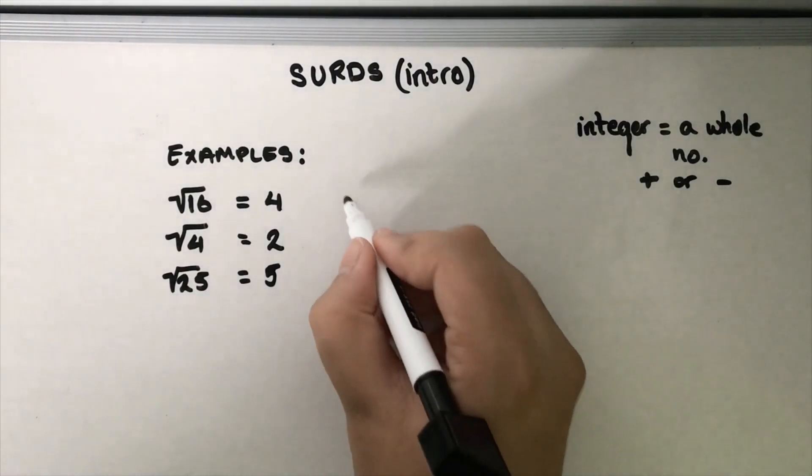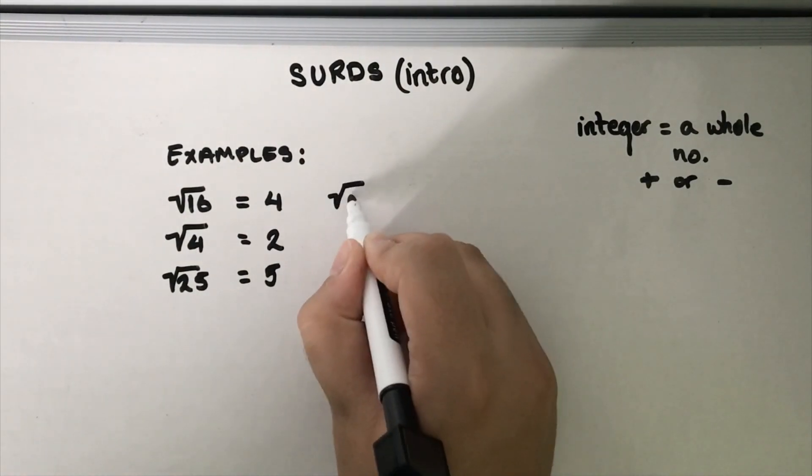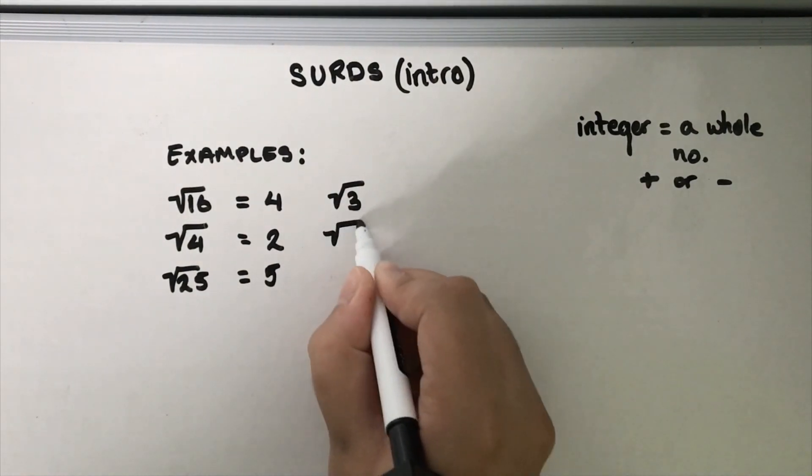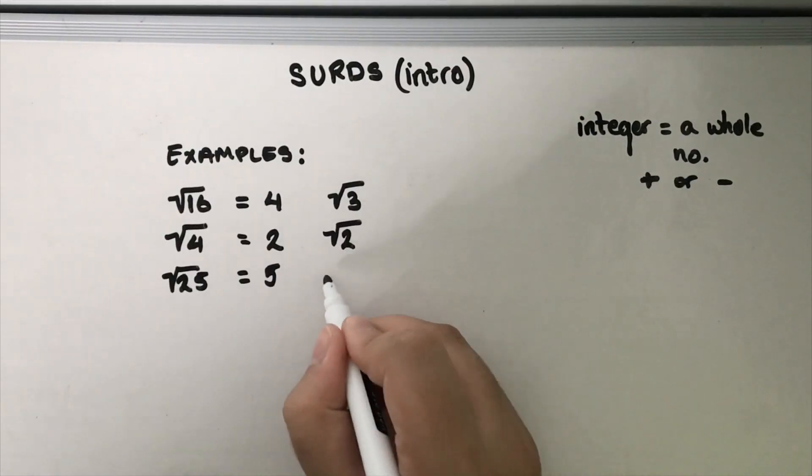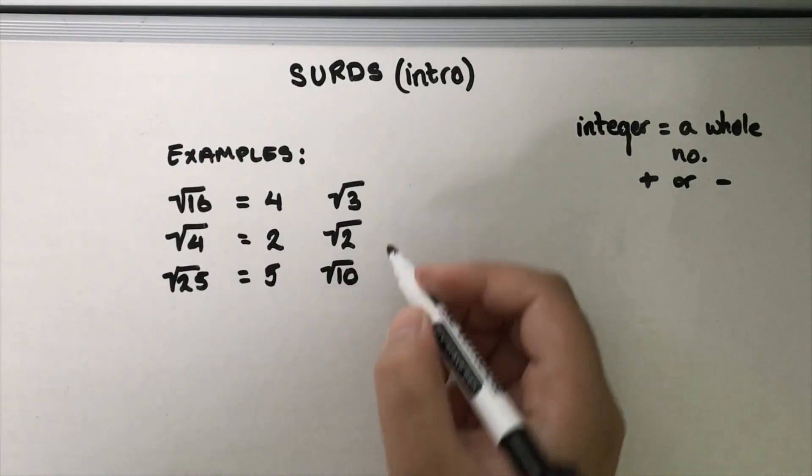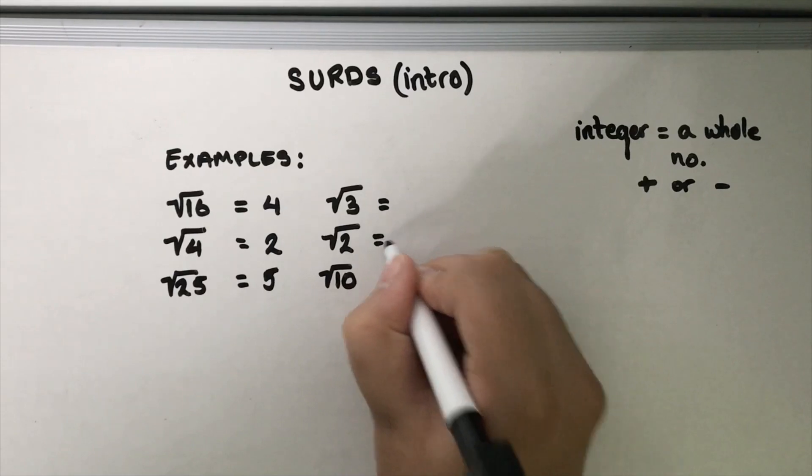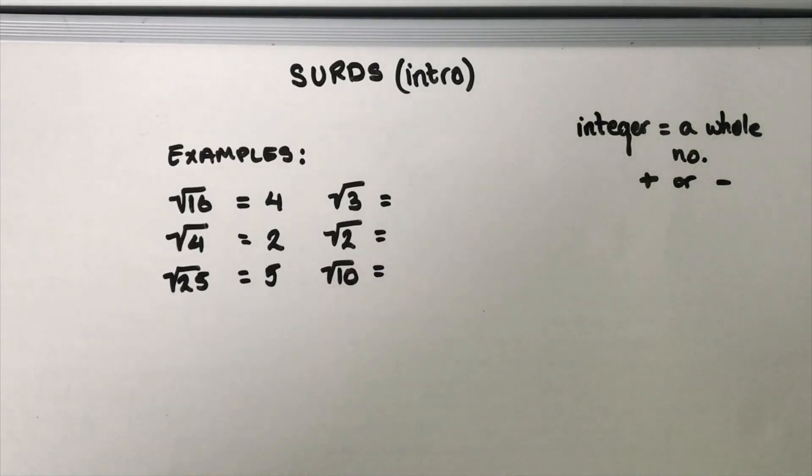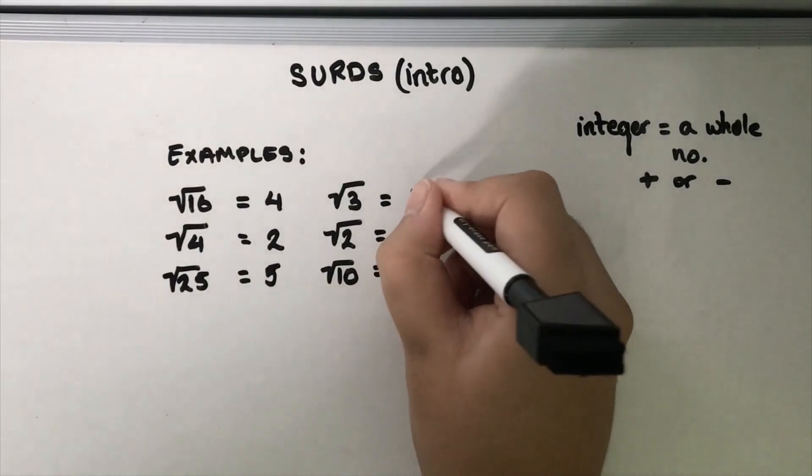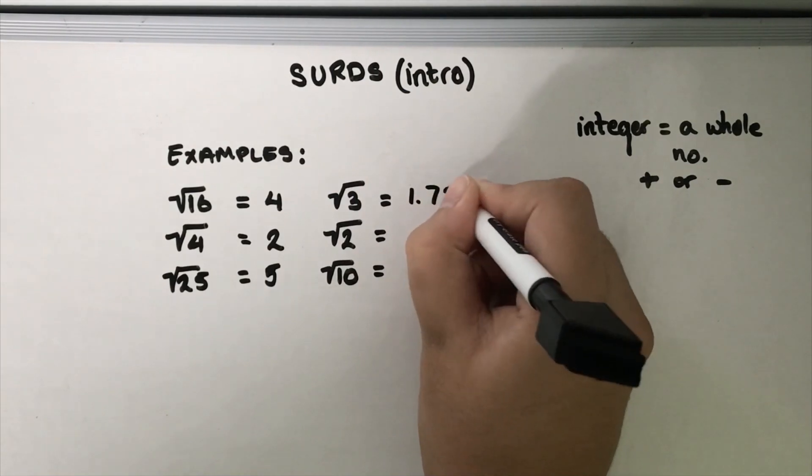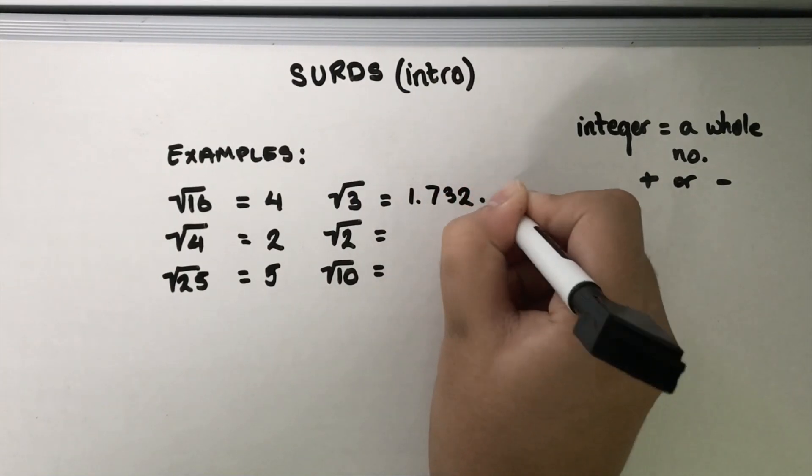Now let me show you some examples of surds: root 3, root 2, and root 10. We know that these are surds because when put into your calculator for root 3 you get 1.732 and so on.